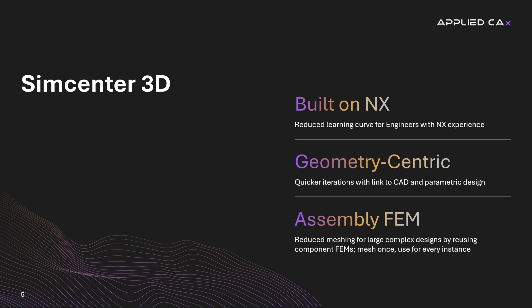Another unique feature to SimCenter 3D is its ability to create assembly FEMs. These are special finite element models that allow for large and complex designs to take advantage of individual component FEMs. The user simply meshes a part once, and the assembly will automatically use this mesh for all instances of that component.